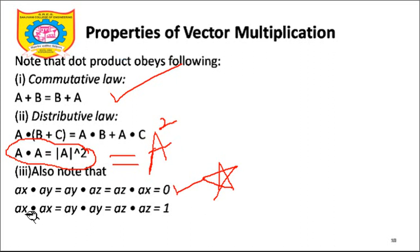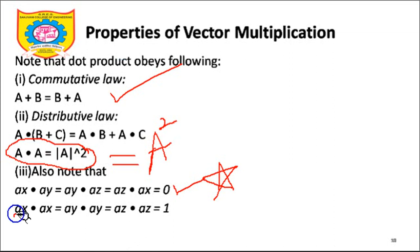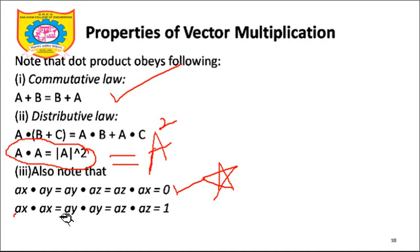Whenever we are talking about similar entities: â_x dot â_x, â_y dot â_y, â_z dot â_z — these will result in their multiplication value. Since a small letter indicates a unit vector, unit vector multiplied by unit vector results in 1. So similar unit vectors give 1, and dissimilar unit vectors give 0. These are three important properties one must understand.